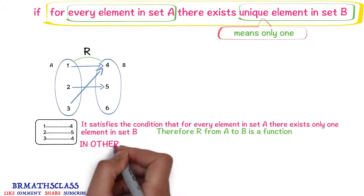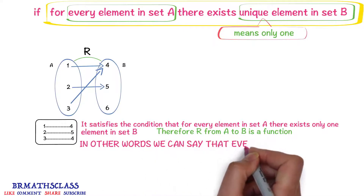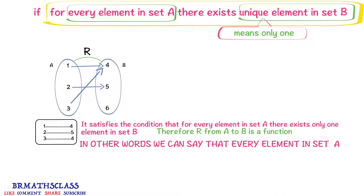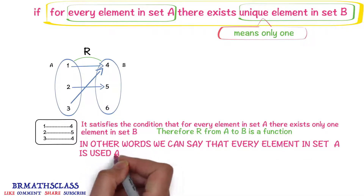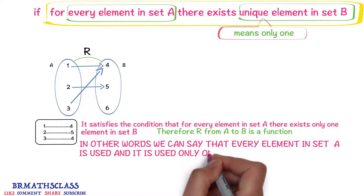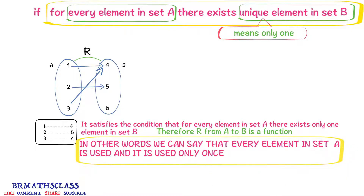In other words, we can observe it this way also: every element in set a is used, and it is used only once. Because of that reason also, we can say that r is a function from a to b.